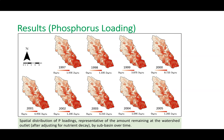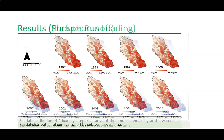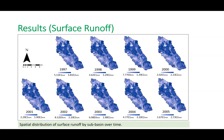The same story holds for phosphorus — as you move from the top to the bottom of the watershed, relative contributions from each sub-basin increase. For surface runoff, there is also significant spatial variability not only within a given year but also across years, with some sub-basins contributing much more than others.